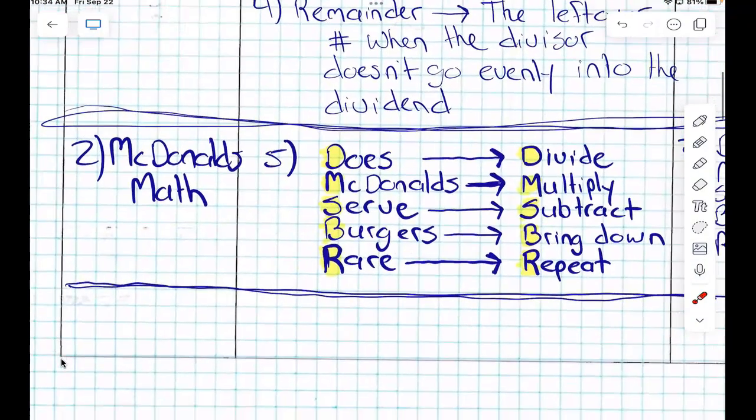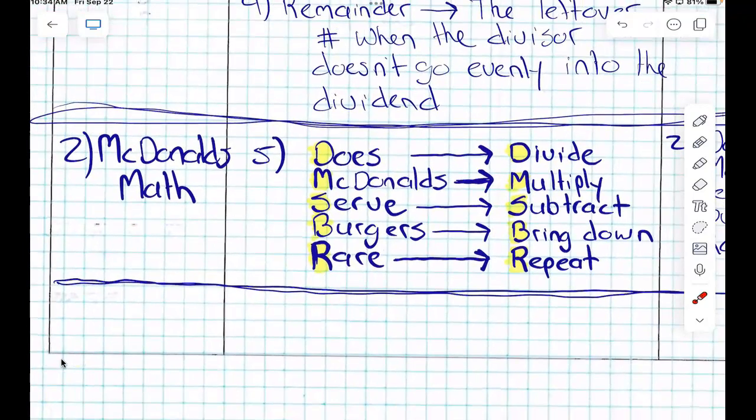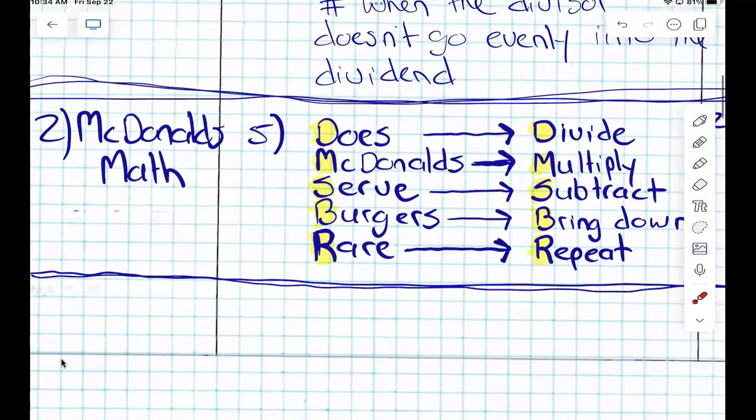Now, when we do long division, we have a way to remember the process. It's called McDonald's math. On the count of three, we're going to read through the process together. One, two, three. Does McDonald's serve burgers rare? Awesome.